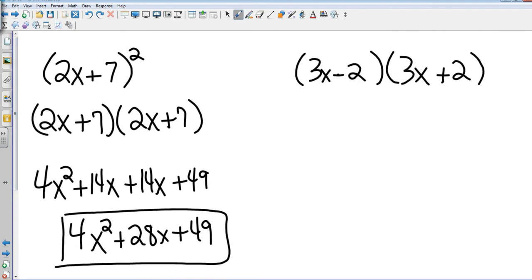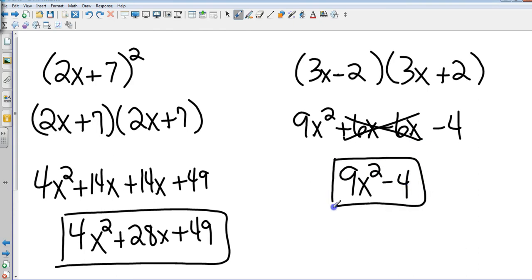And then over here I'm going to get 9x squared plus 6x minus 6x minus 4. Two terms in the middle cancel, and I come up with 9x squared minus 4.